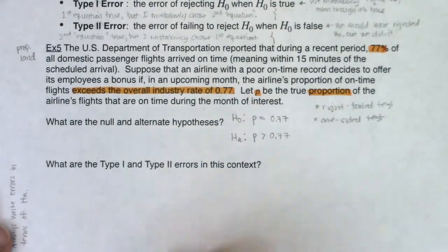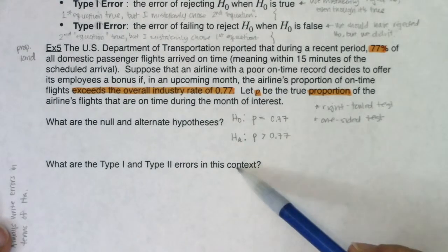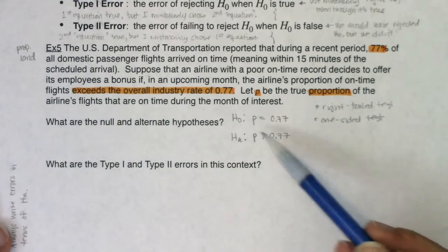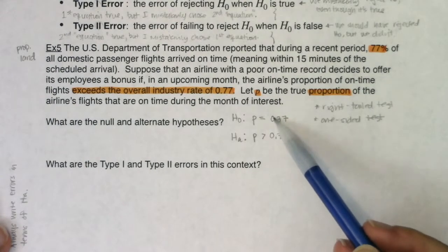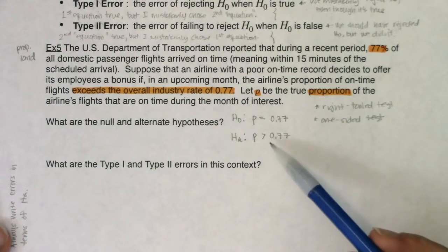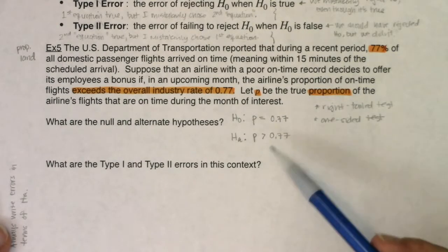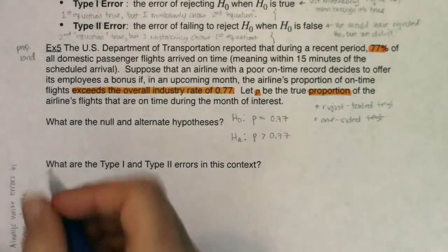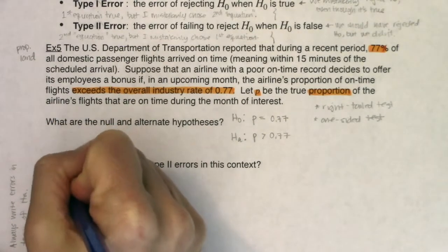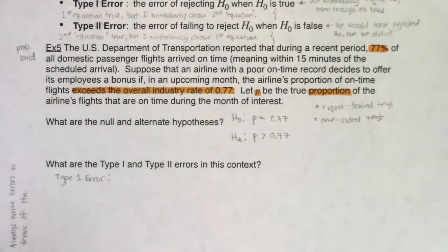Stats folks write errors about the alternate because that's where we can mess up — we assume the null is true. It's all about whether we have enough evidence to change away from the status quo and go with the alternate. Beyond a reasonable doubt, do we go with the alternate? Let's take a look at the Type 1 error.